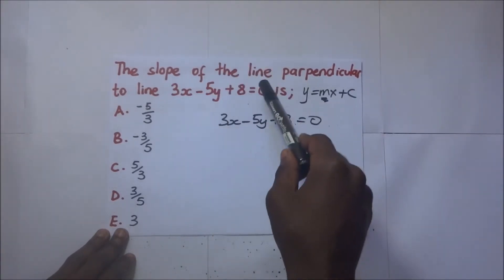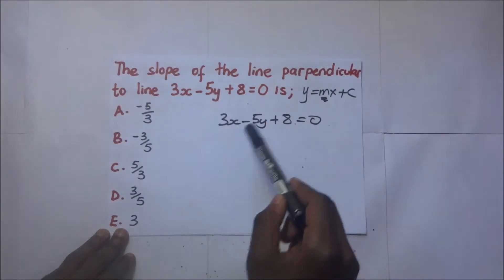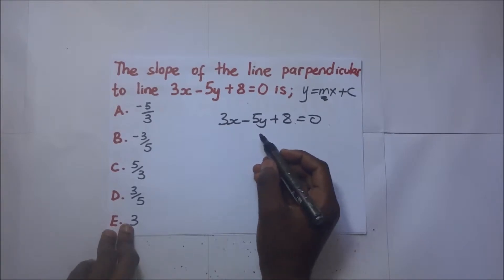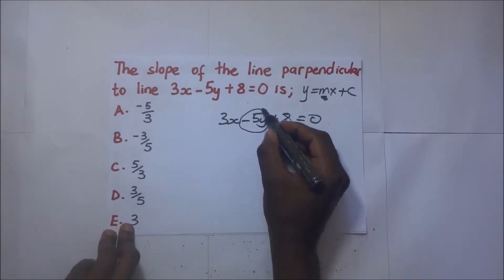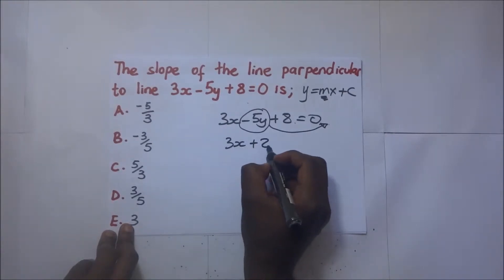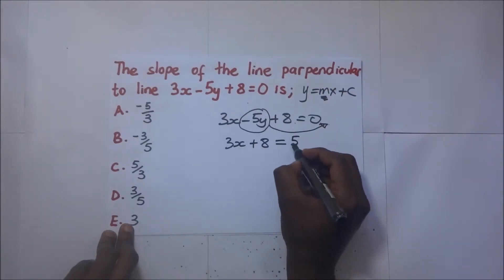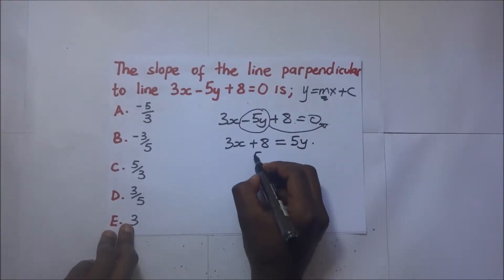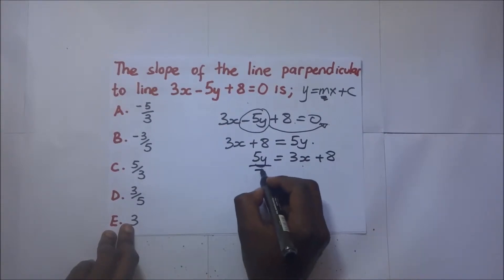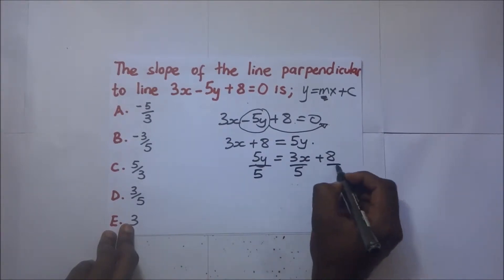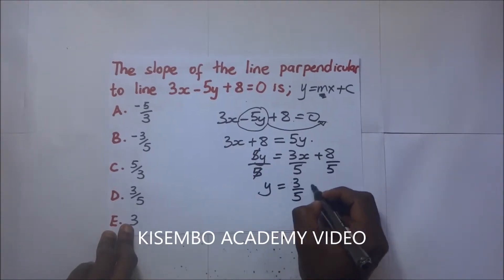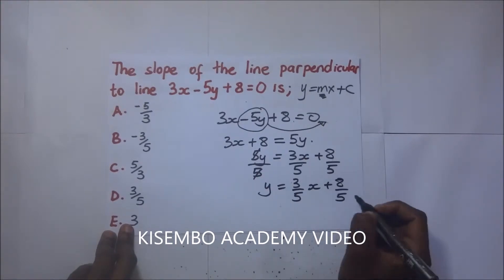We make y the subject of the formula. Rearranging gives us 5y = 3x + 8. Dividing both sides by 5, we get y = 3 over 5 times x plus 8 over 5. So the gradient of this line is 3 over 5.